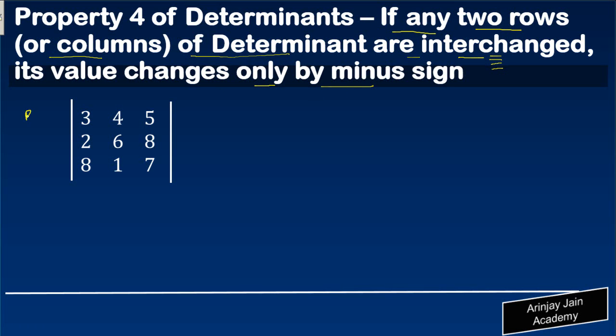What this means is that, for example, you have row 1, row 2, and row 3. If you interchange the value of row 1 with row 3, meaning row 3 becomes row 1 and row 1 becomes row 3, it looks something like this: row 3 becomes row 1 (8, 1, 7), row 2 remains as it is, and then you have 3, 4, and 5.